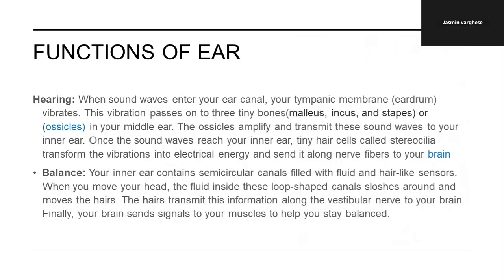Now we will see the functions of the ear. For hearing: when sound waves enter your ear canal, the tympanic membrane — the eardrum — vibrates. This vibration passes to the middle ear, which consists of three tiny bones: malleus, incus and stapes. These ossicles amplify and transmit the sound waves to your inner ear. Once the sound waves reach your inner ear, the tiny hair cells called stereocilia transform the vibration into electrical energy and send it along nerve fibers to your brain.